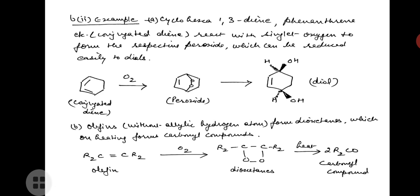Olefins without allylic hydrogen atoms form dioxetanes, which on heating form carbonyl compounds. You can see the equation: olefins without allylic hydrogen atoms react with singlet state O2, addition takes place, and dioxetanes are formed. Dioxetanes on heating form carbonyl compounds.